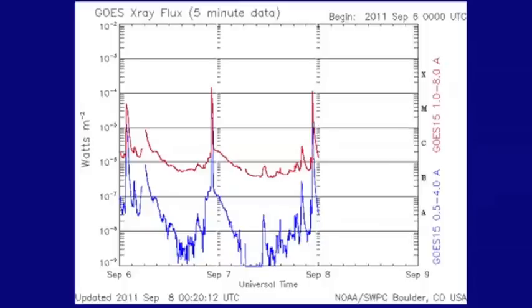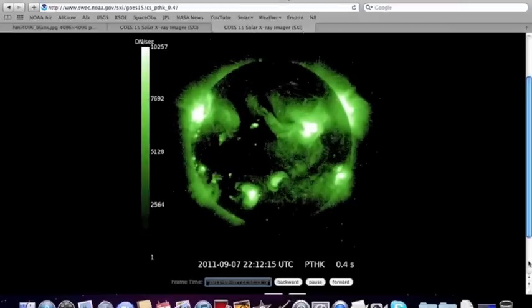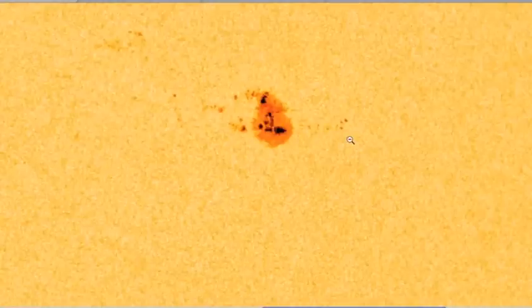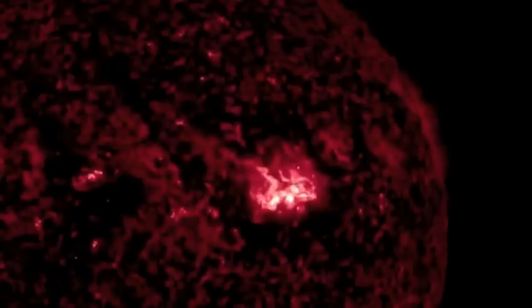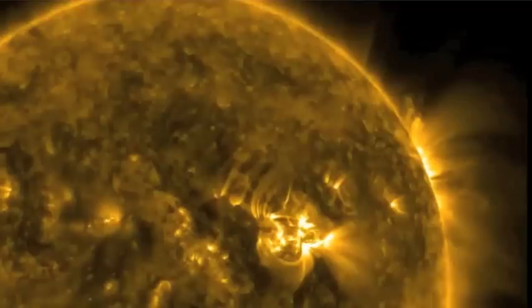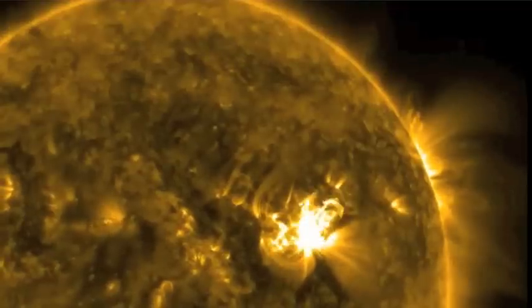Now each of these events came out of the same solar active region. And you can see it here on the GOES. It's solar active region 11283 and here's a close-up of it right here. These shots are from the SDO AIA. These are all of the last X-flare that we had.